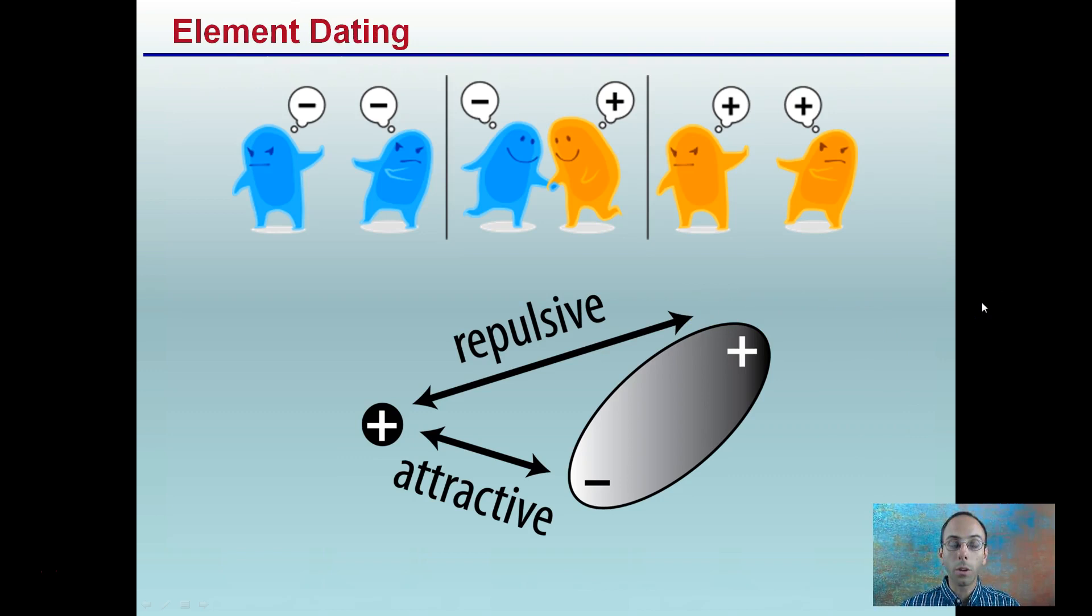So we're talking about ions here. We're looking at bonding. Keep in mind, two of the same types, so two negatives or two positives, will repel each other. And a positive and a negative will attract one another. So you see that here. A positive and a positive are repulsive, and a positive and a negative are attractive. And that's going to be important to understand molecules and how things bind together.